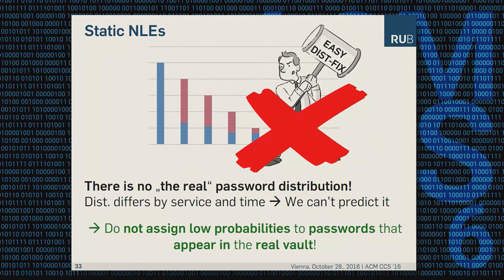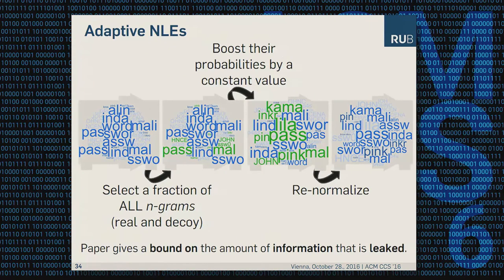Our approach is to no longer assign low probabilities to passwords that appear in the real vault. By considering the passwords in the real vault, we can ensure the real vault is hidden among the decoys. We followed a Markov model-based approach using n-grams: we select a fraction of all n-grams from both the real and decoy vaults, boost their probabilities by a constant value, and renormalize. We give a bound on the information leaked in the paper and show it is not significant.